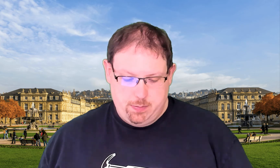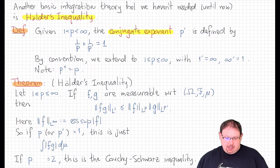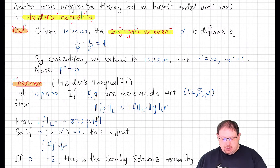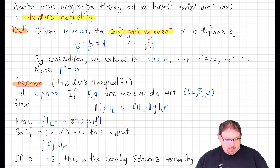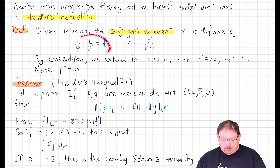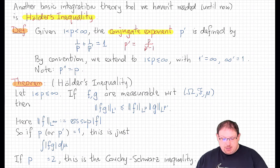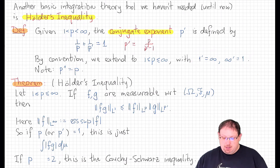Hölder's inequality is an inequality between different Lp norms. Given some exponent p strictly between 1 and infinity, its conjugate exponent p' is defined by the relation 1/p + 1/p' = 1. In other words, p' is just the constant p over p minus 1. We could also make sense of p' when p equals 1: then 1/p' should be 0, so p' should be infinity. Similarly, if p equals infinity, then p' should equal 1. By convention, we define p' that way in the cases where p is 1 or infinity.